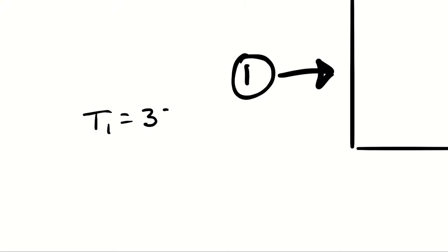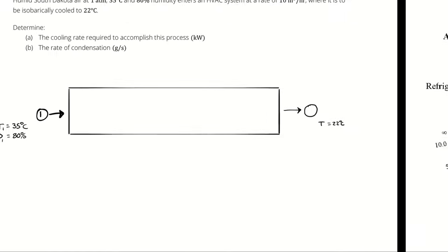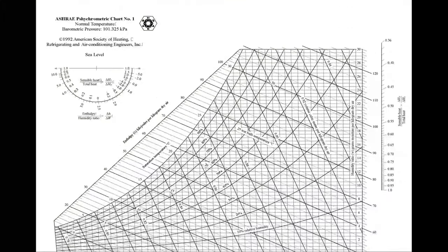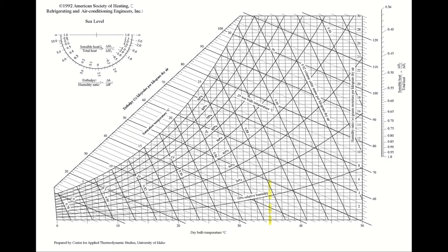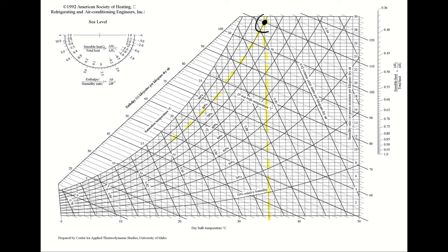So I have air entering at 35 degrees Celsius and 80% relative humidity and being cooled to 22 degrees Celsius. The first question I have to answer is: is this simple cooling or not? To answer that, let's look at this on the chart. We're starting with 35 degrees Celsius and 80% relative humidity. Those intersect up here, and my cooling process begins by moving to the left horizontally until it reaches the 100% relative humidity line. If I encounter the desired set point temperature first, then I have simple cooling.